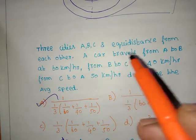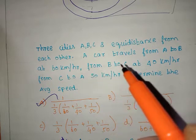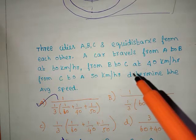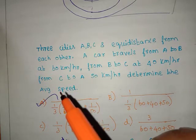A car travels from A to B at 60 km per hour, B to C at 40 km per hour, from C to A, 50 km per hour. Determine the average speed.